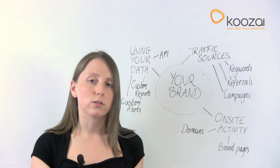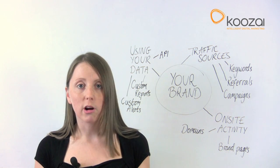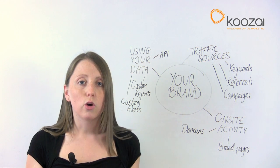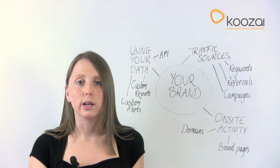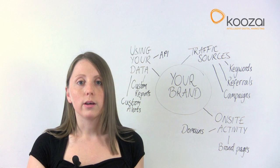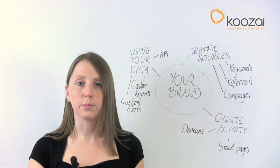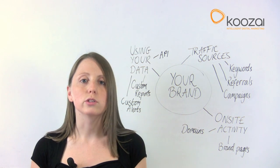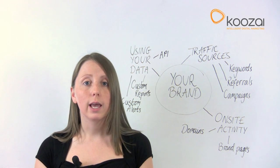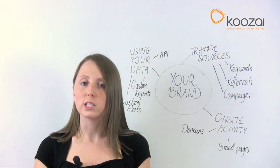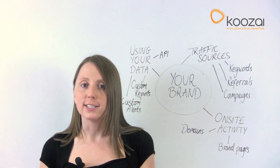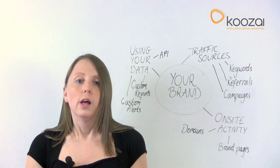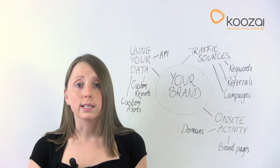I'd recommend starting by playing around — put the data into Excel and draw yourself a graph so you can see it really easily. Track it over the months and you can see whether, for example, activity on your brand pages suddenly increases in one month when you're launching an advertising campaign. A tidier, less manual way to do this is to use custom variables, labelling each page with what it actually is — so you label all your brand pages with brand terms and categorize them that way.